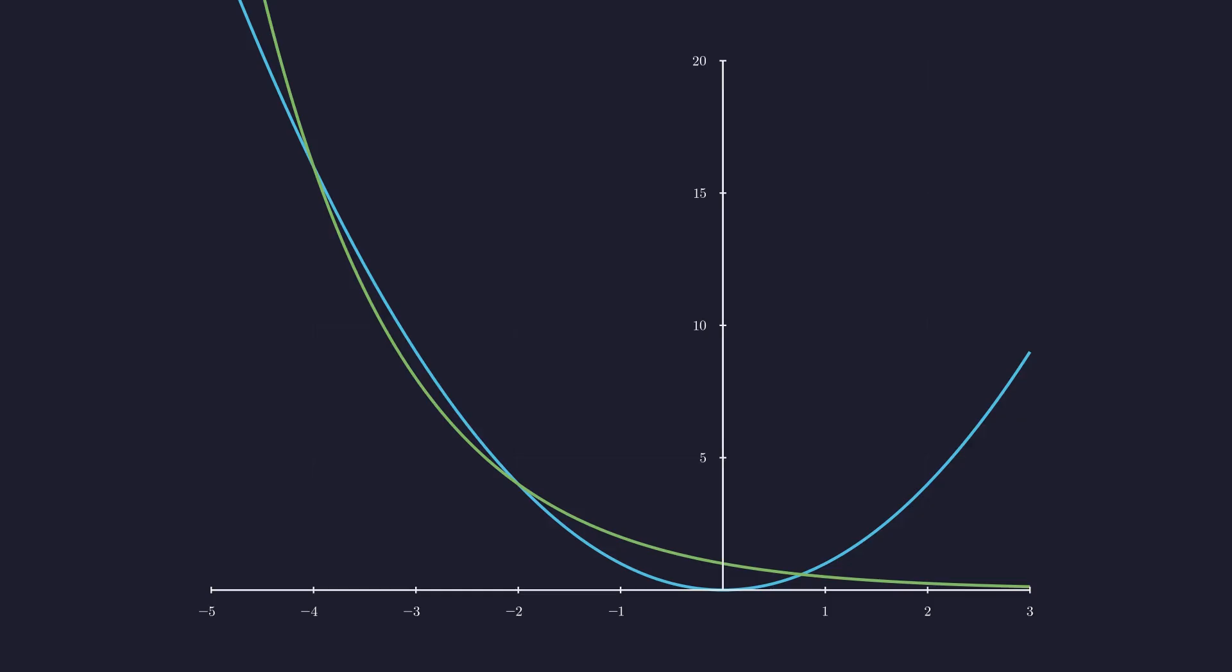As a final confirmation, let's visualize all three solutions on the graph. We reconstruct the coordinate system. Here are the two functions, the parabola in blue and the exponential in green. And here are the three intersection points, precisely where our algebraic derivations predicted. This demonstrates a satisfying consistency between visual and analytical methods in mathematics.